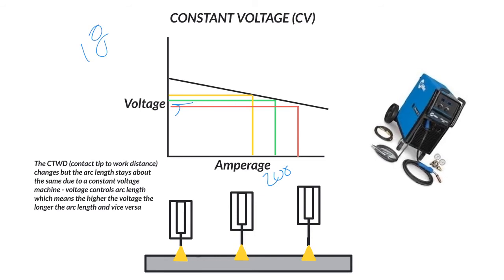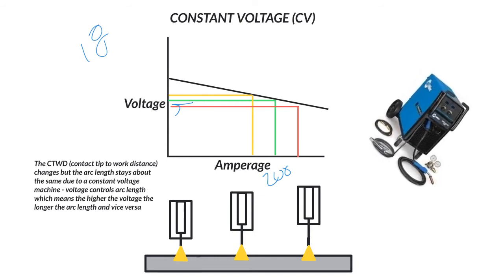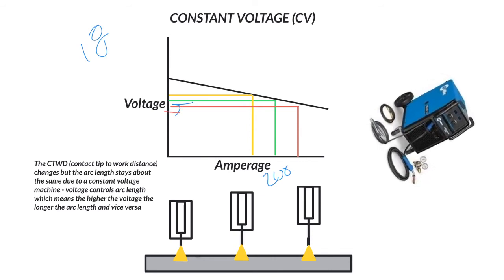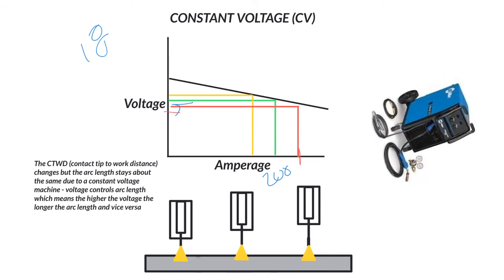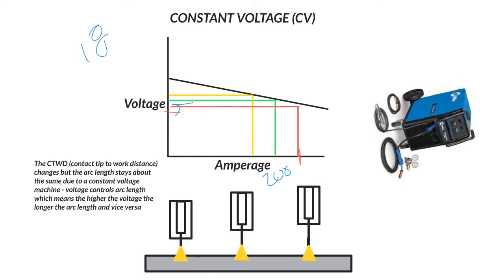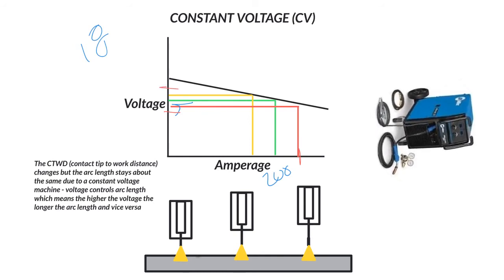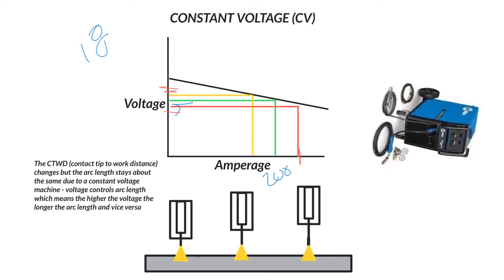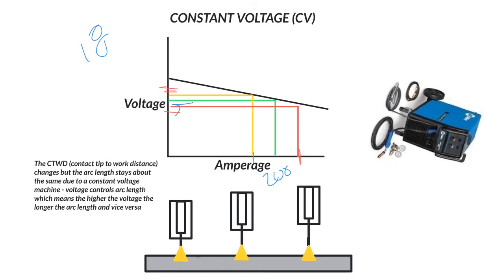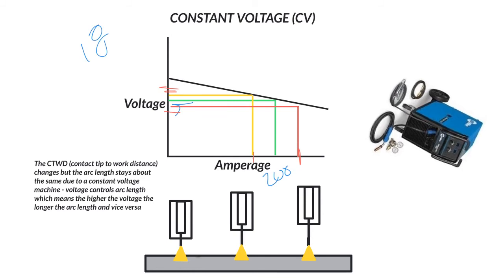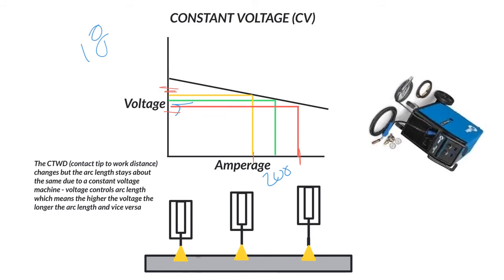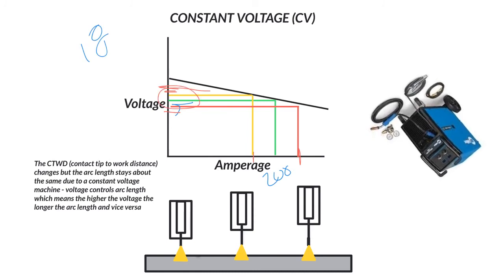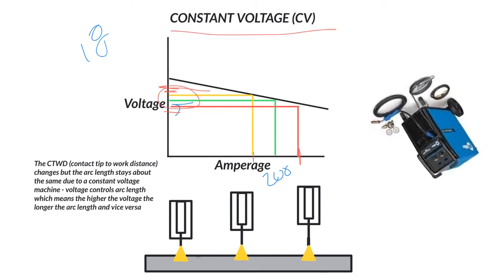So if we are going to get a little bit closer with the MIG gun, our voltage might drop a little bit, which means that our amperage will actually go up. And vice versa, the longer arc will create a little bit more voltage and less amperage. So yes, you can have a little bit more or less amperage based on your arc length. But keep in mind, these are all very close over here, which is why we call it a constant voltage machine.